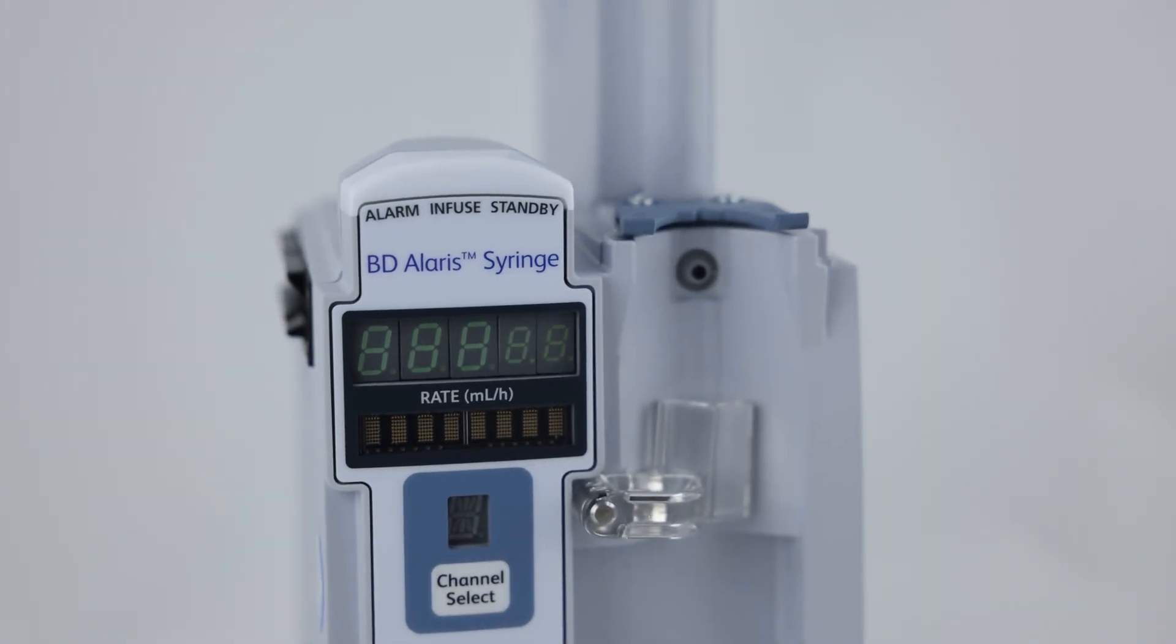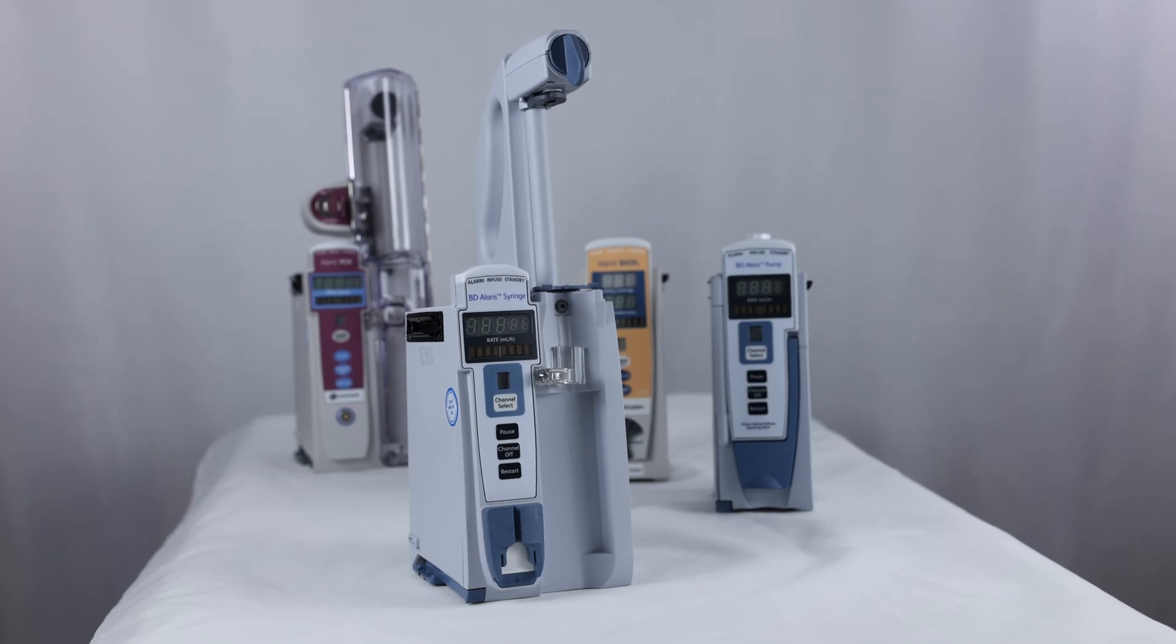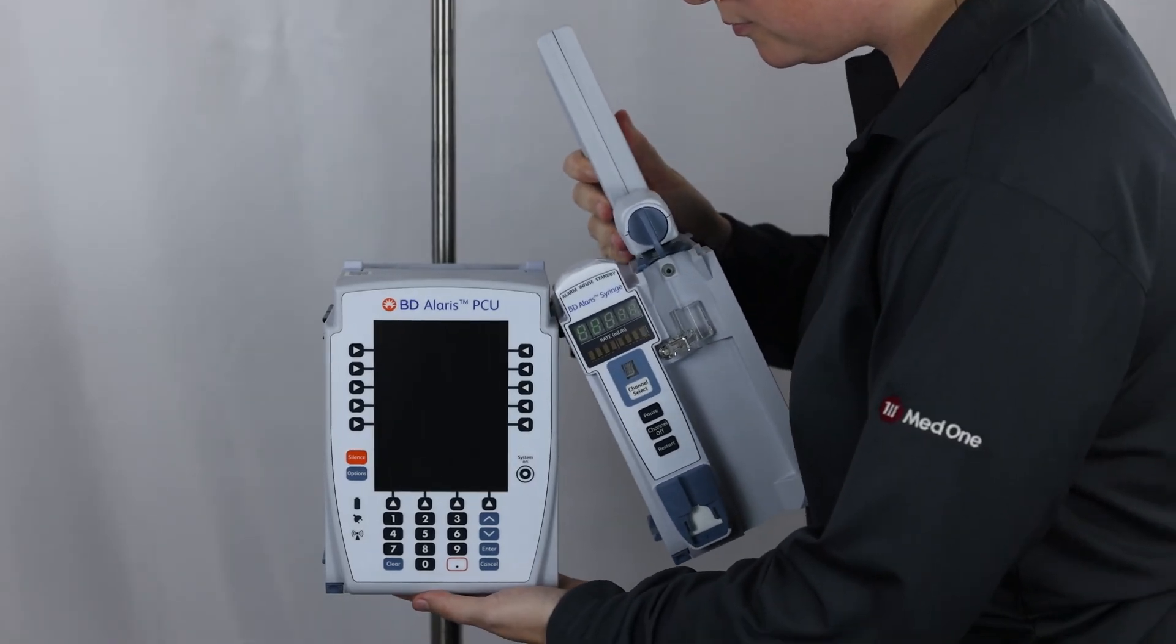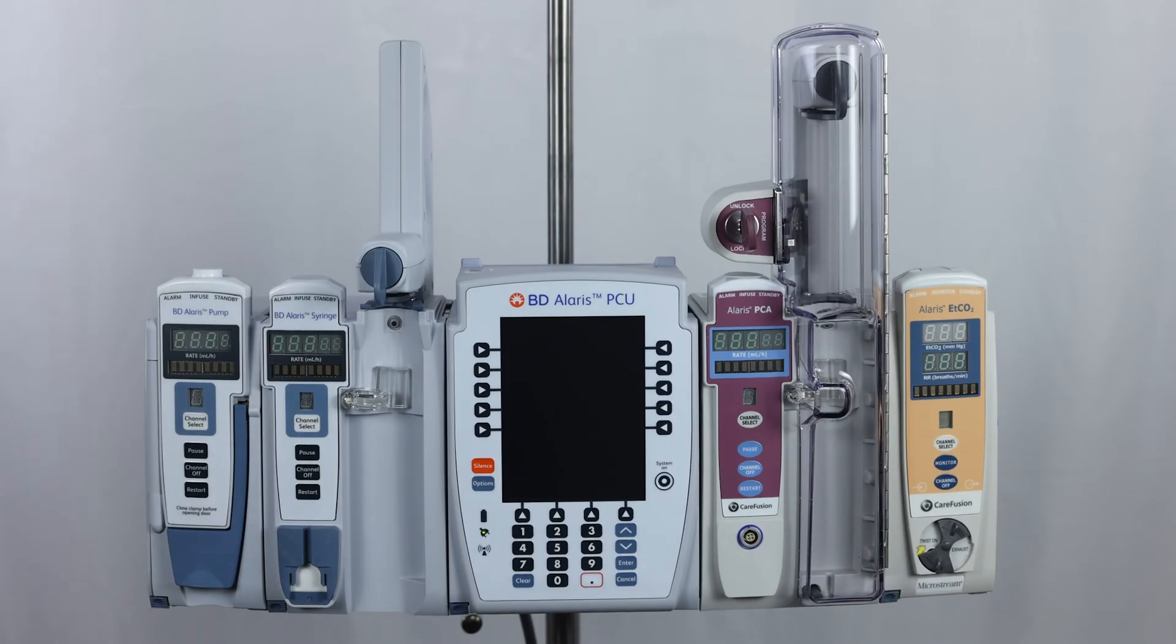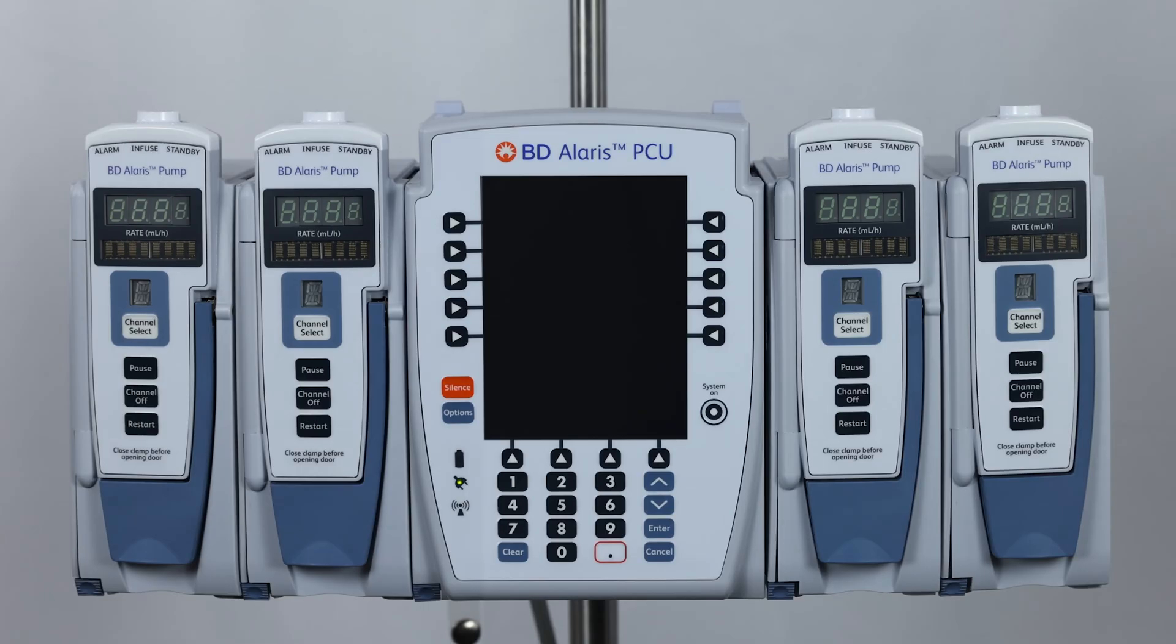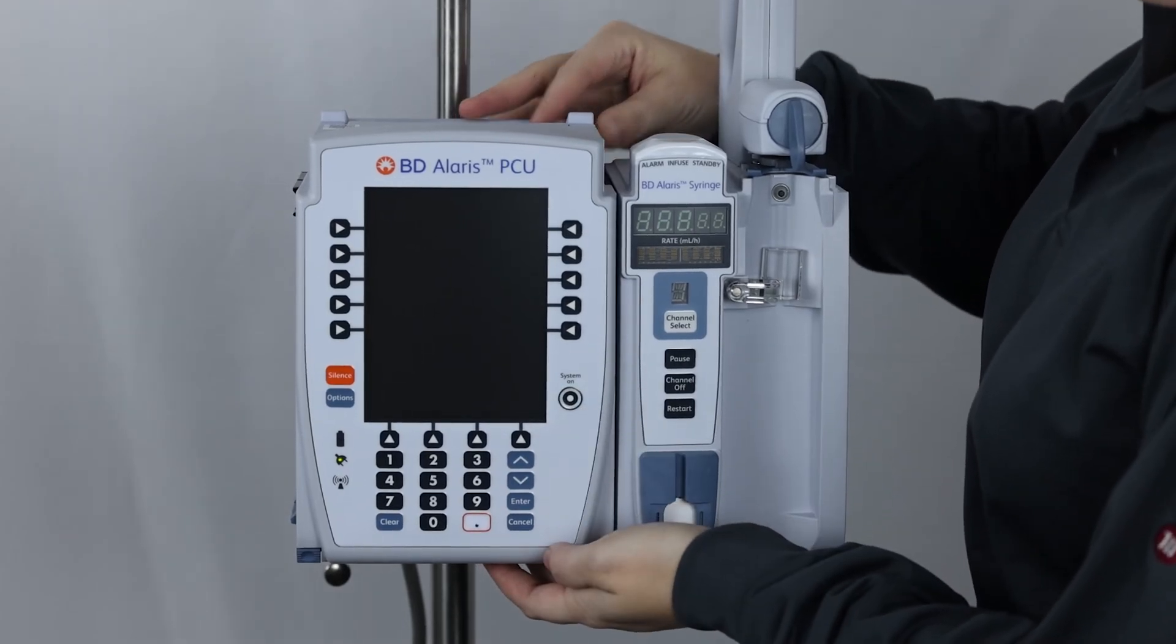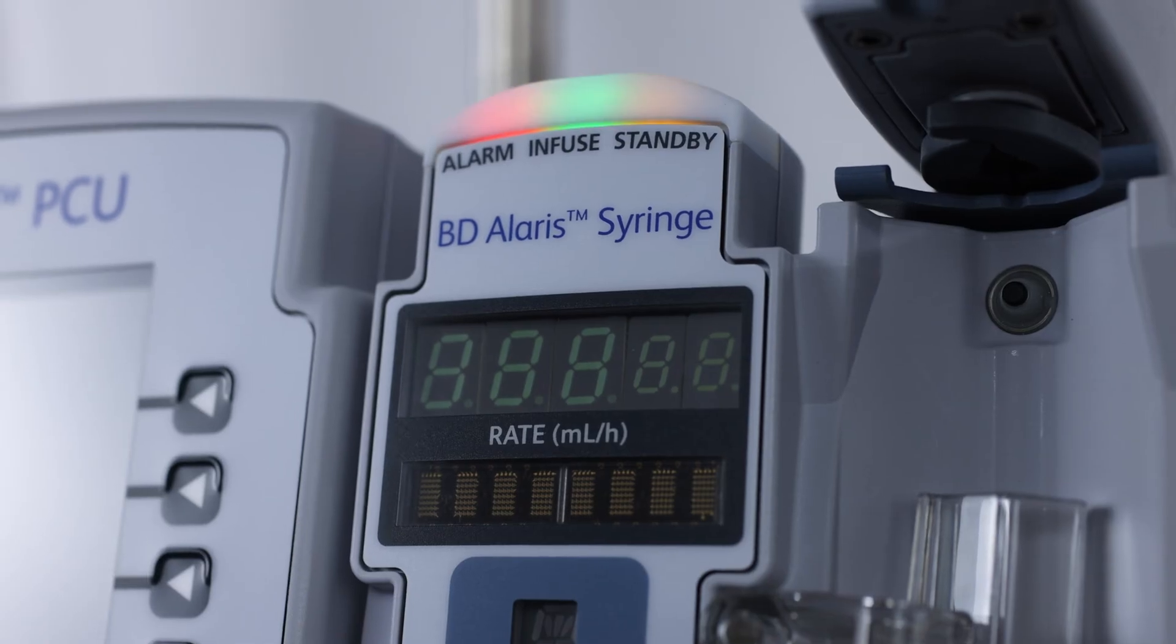The Alaris 8110 is the syringe pump module that is part of the modular Alaris system by BD. In order to use the 8110 module, it must be connected to the 8015 point of care unit or PCU. Up to four modules of any combination can be attached to the PCU. The Alaris system is powered through a wall outlet but has an internal battery life of six hours should a power outage prevent the pump from being plugged in.